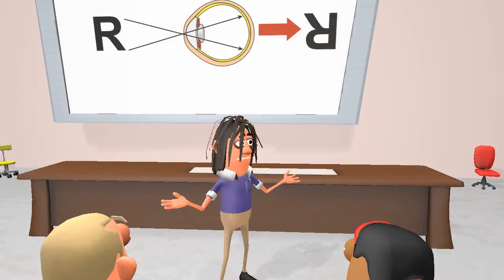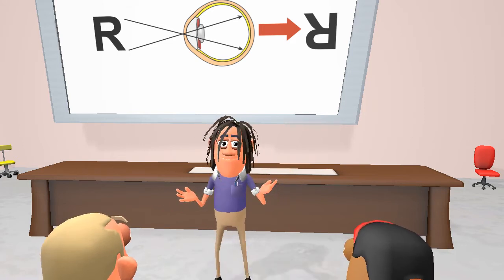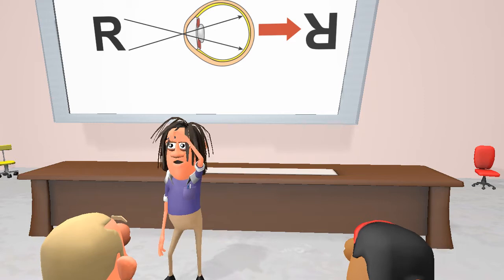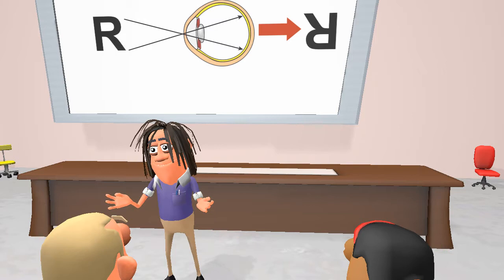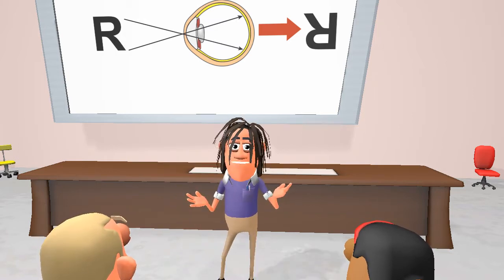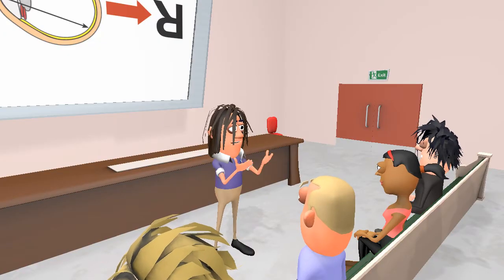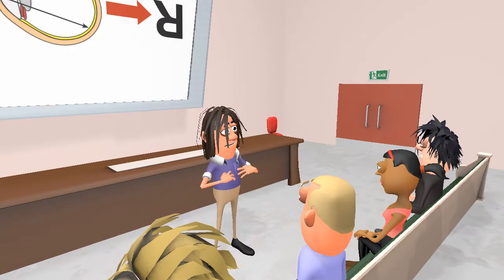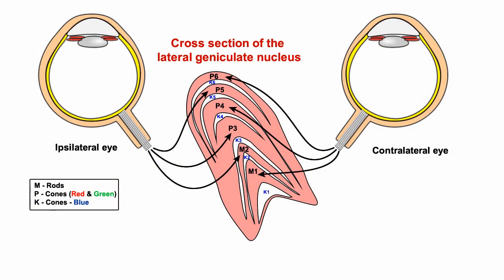Now we have to remember that the image on the retina is upside down and back to front. So this means that the input to the right lateral geniculate nucleus comes from the left visual field, while input to the left lateral geniculate nucleus comes from the right visual field. And if that wasn't complicated enough, inputs from the right and left eyes project to alternate layers of neurons within the lateral geniculate nucleus.